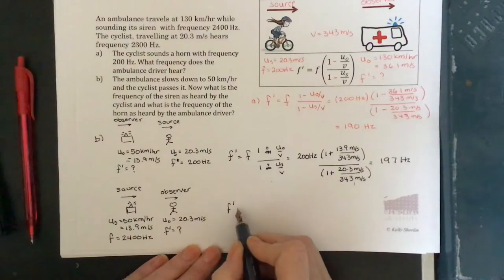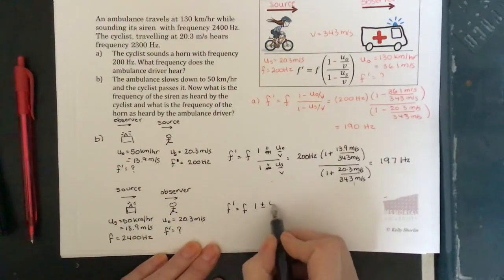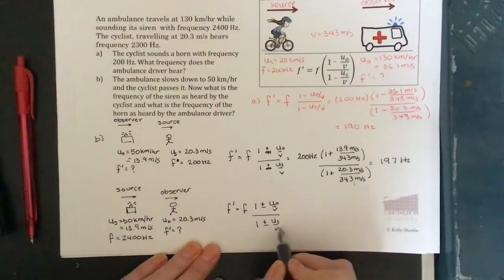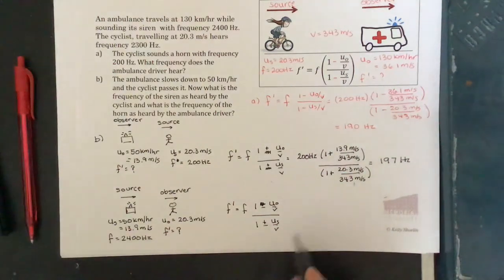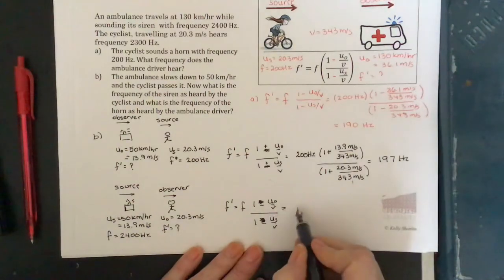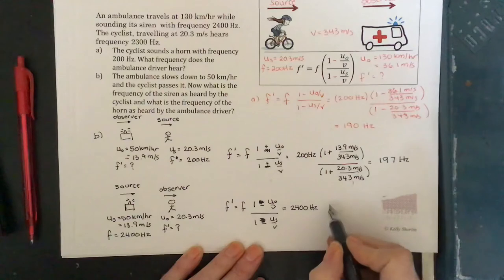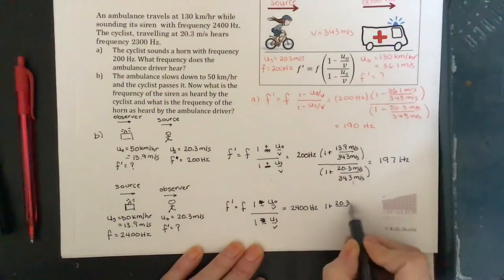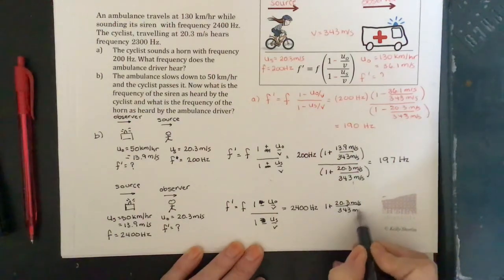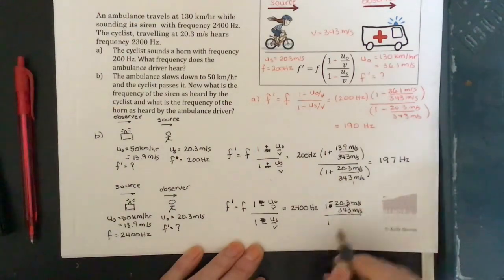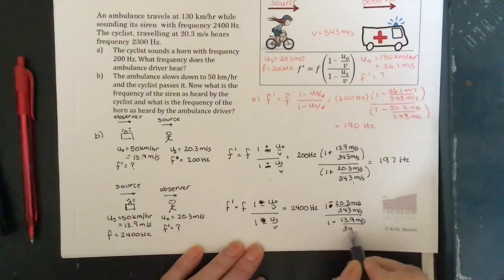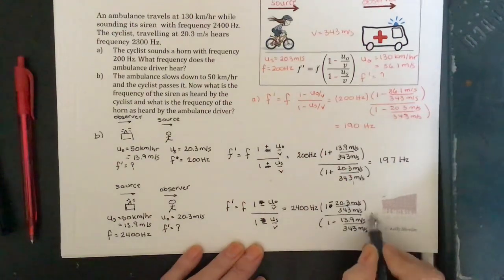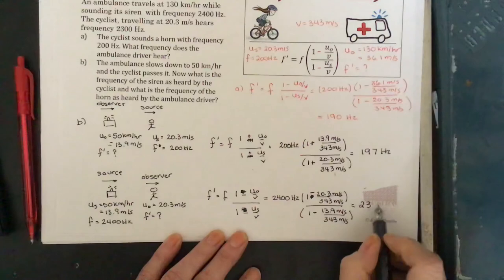Writing the Doppler equation for the cyclist as observer: F′ = F times (1 ± u₀/v) divided by (1 ± uₛ/v). The observer is going away from the source, so we need a minus sign in the numerator. The source goes towards the observer, producing a higher frequency, so we need a smaller denominator — also a minus. Plugging in: 2400 hertz times (1 minus 20.3 divided by 343), divided by (1 minus 13.9 divided by 343). The result is 2353 hertz.